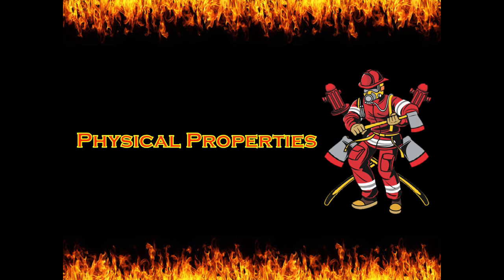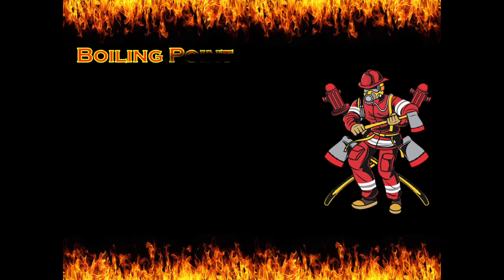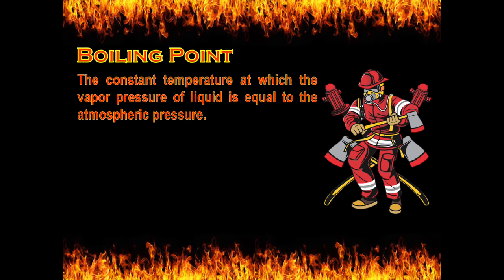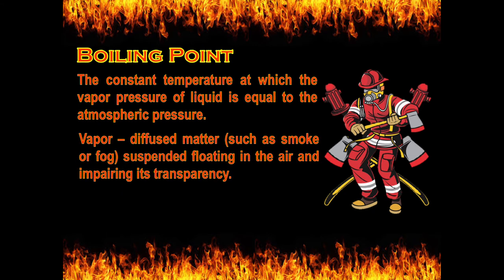The physical properties of fire are the following: first is boiling point, second is ignition point, third is flash point, and the last one is fire point. The boiling point is the constant temperature at which the vapor pressure of a liquid is equal to the atmospheric pressure. Vapor refers to diffuse matter such as smoke or fog suspended and floating in the air, impairing its transparency.